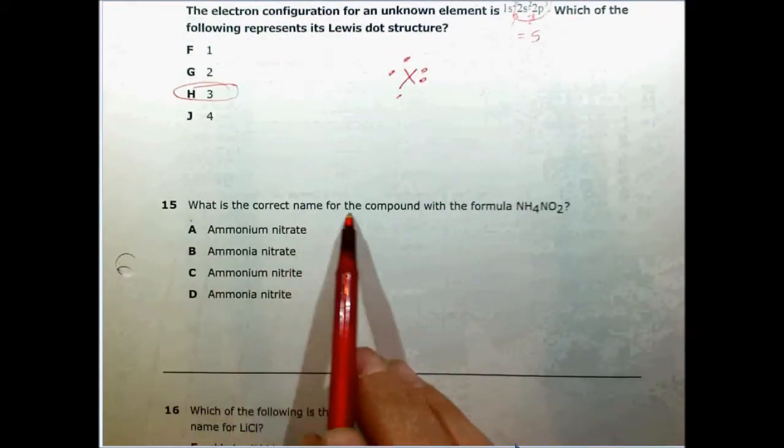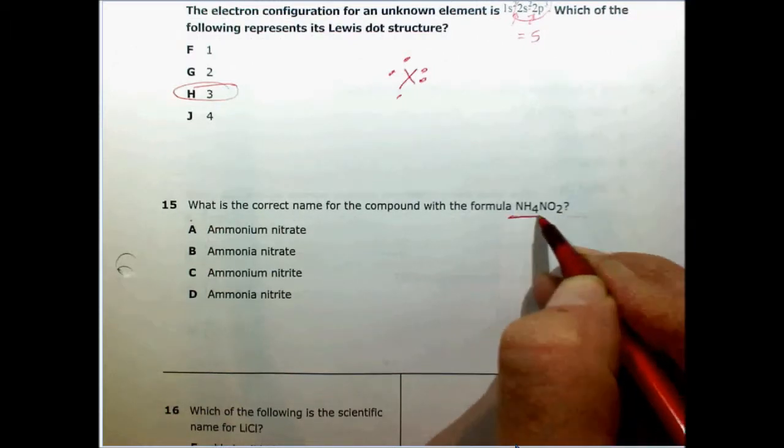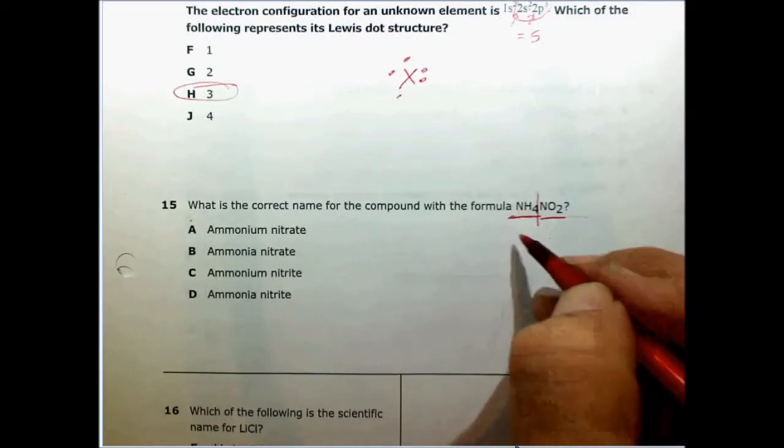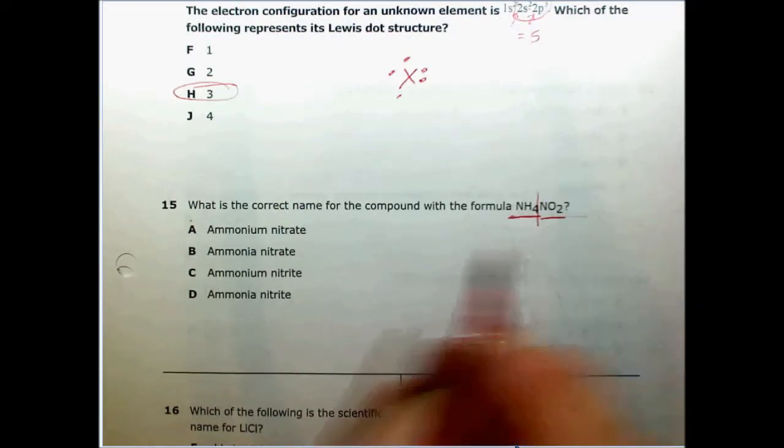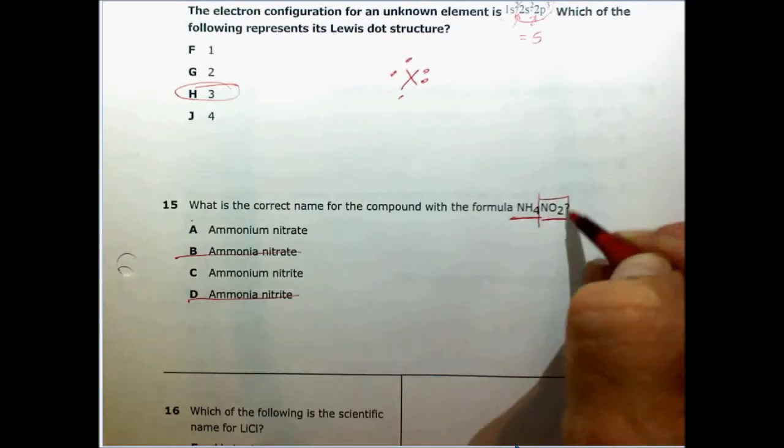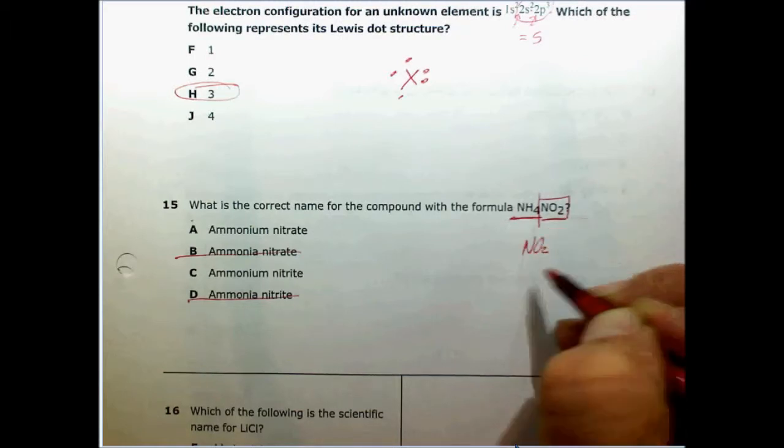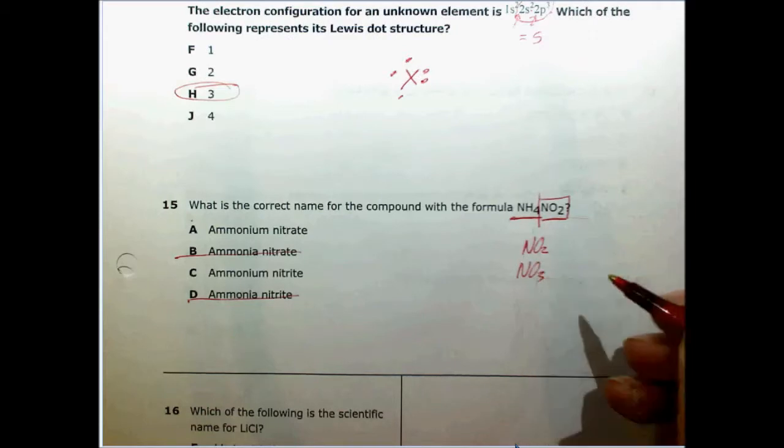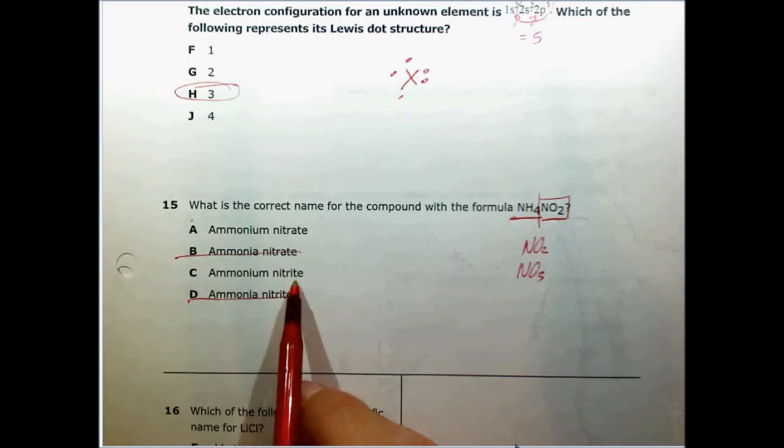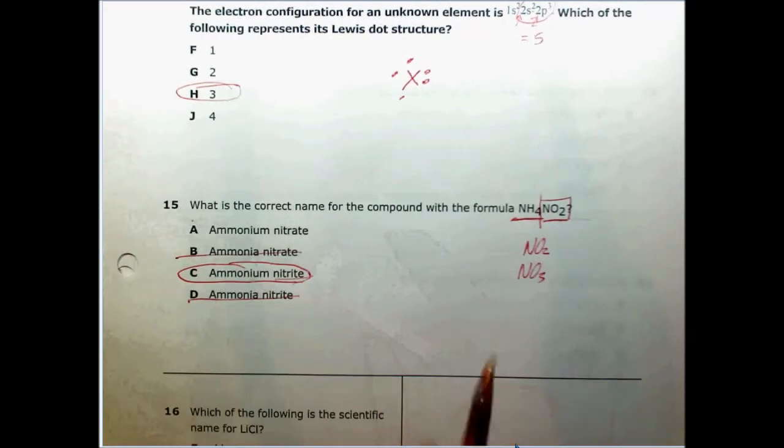What is the correct name for the compound with the formula NH4NO2? On our periodic table on the back side, we find that there are polyatomic ions. This first one is called ammonium, so we can get rid of these two that say ammonia. We have to find NO2. There's sometimes confusion because NO2 and NO3 sound very similar. NO3 is nitrate, but NO2, what they've given us here, is nitrite. Ammonium nitrite is the correct answer.